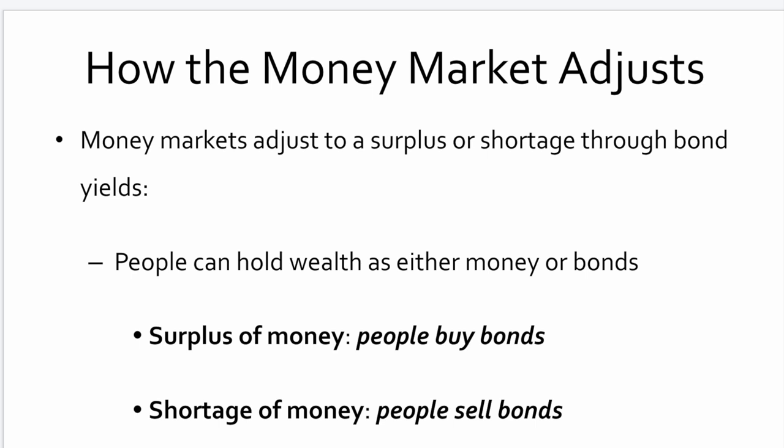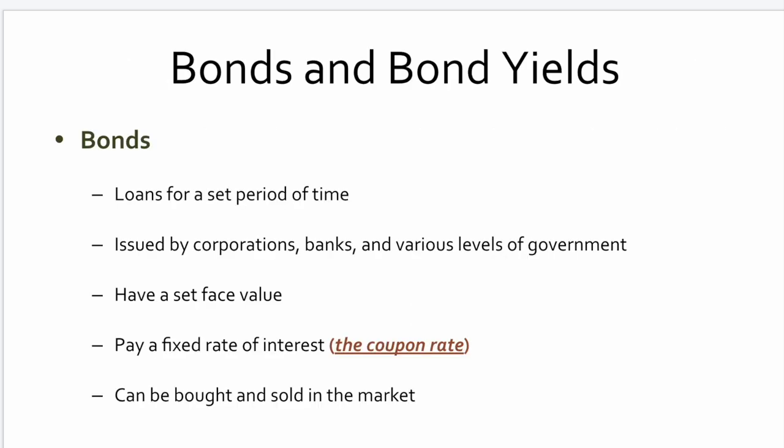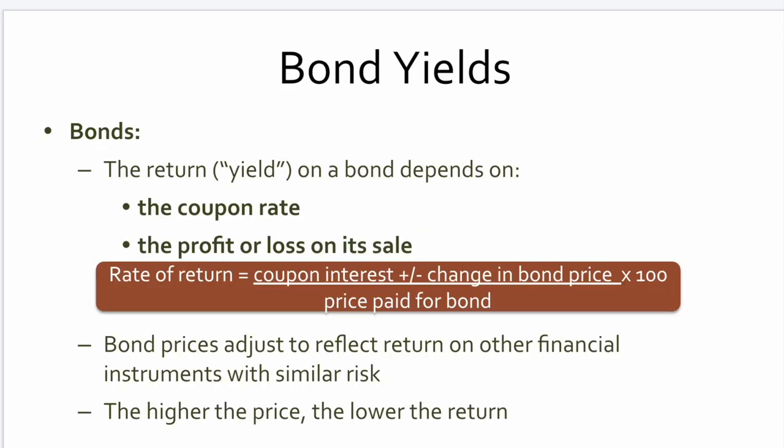Money markets adjust to surplus or shortage through what's called bond yields. Bonds are instruments sold on the market — effectively short-term loans issued by corporations, banks, and various levels of government. They have a set face value, the payment of interest (the coupon rate) is fixed, and they can be bought and sold on the market. Bond prices adjust to reflect the return on financial instruments with similar risk — they automatically adjust. The higher the price, the lower the return.